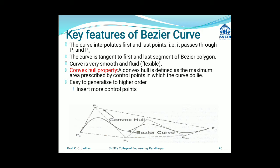Key features of the Bezier curve: First, the curve interpolates the first and last points — it passes through P0 and Pn, where P0 is the starting point and Pn is the last point. The curve is also tangent to the first and last segment of the Bezier polygon — that first segment and last segment should be tangent to the polygon.